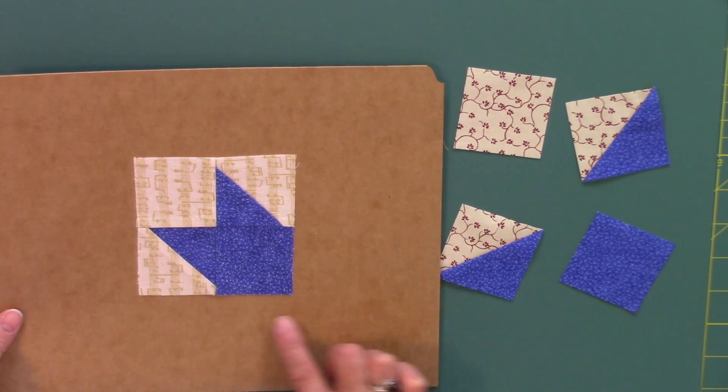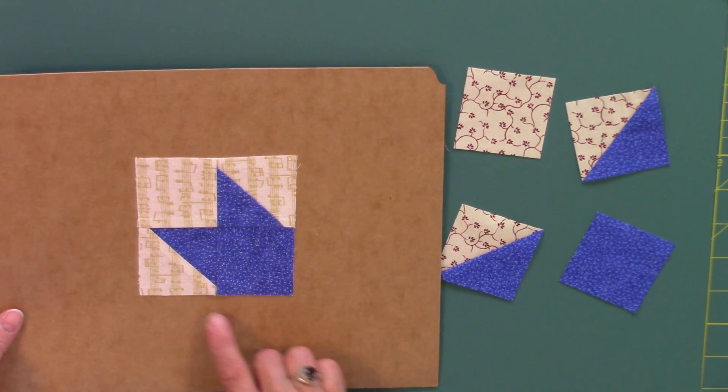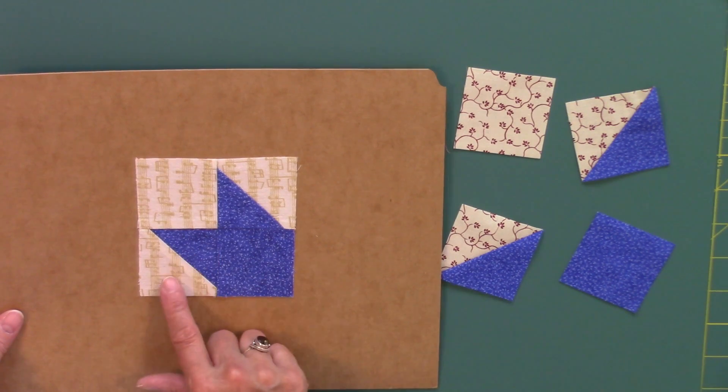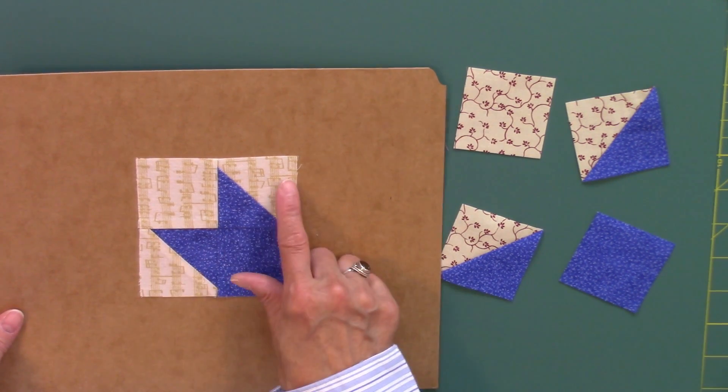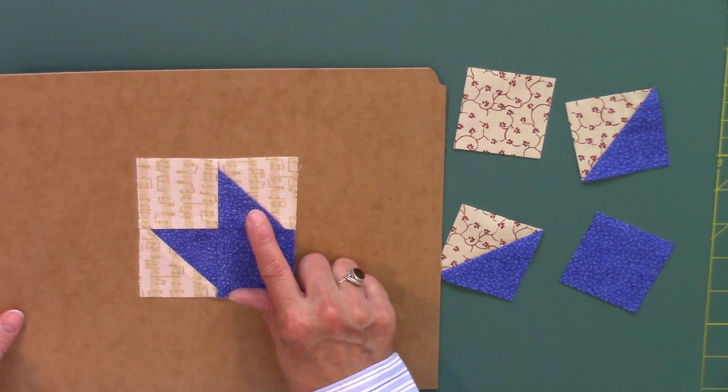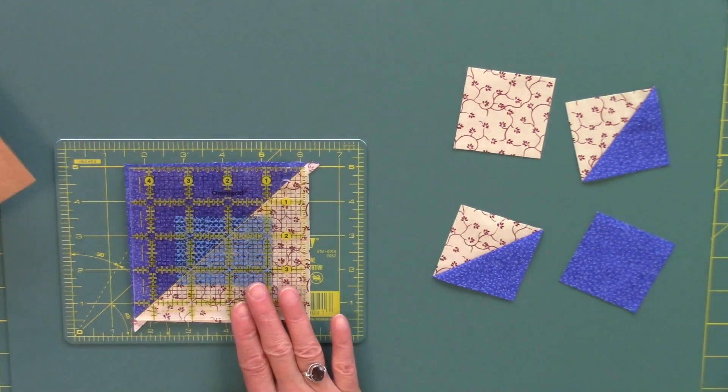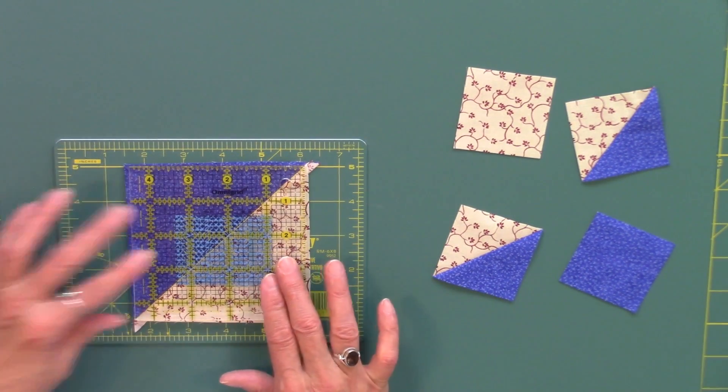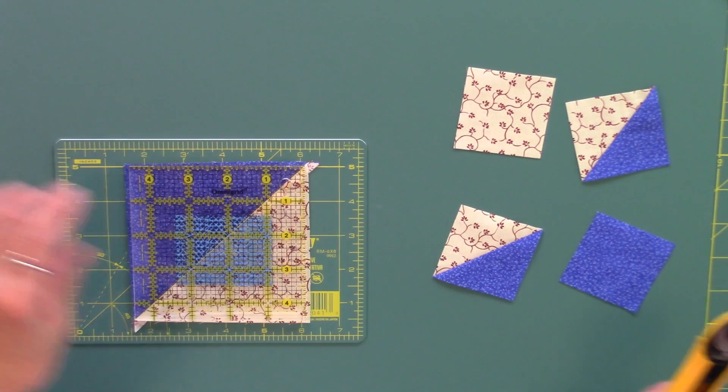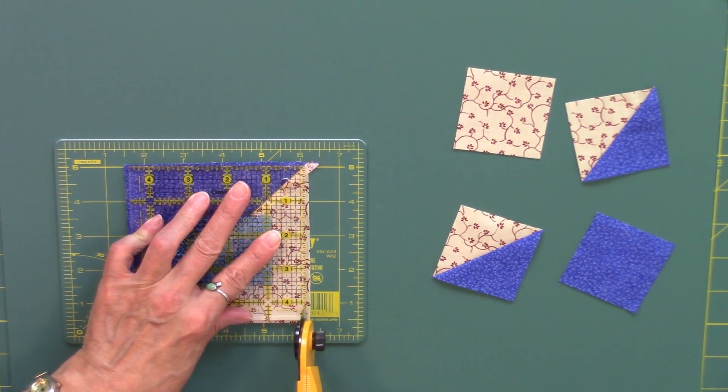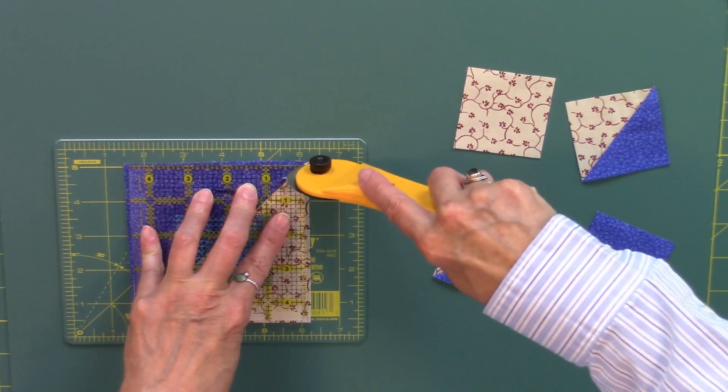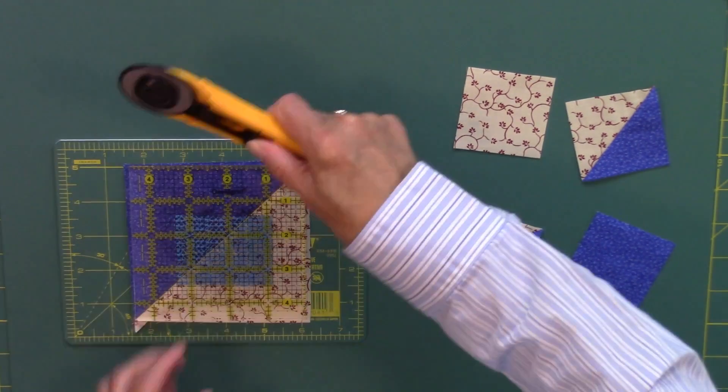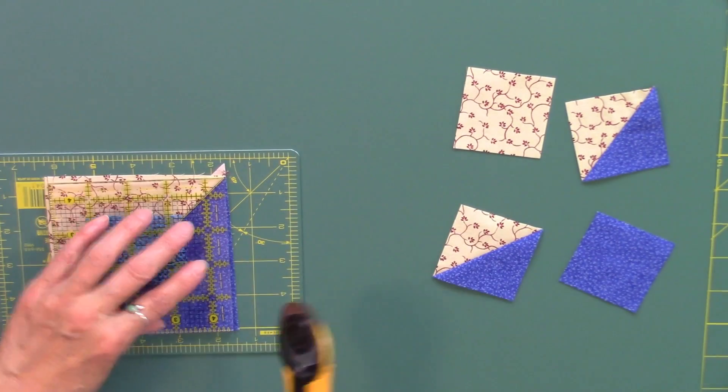Within each of the star points that we are going to create I use one half square triangle that's pressed to the light and the other half square triangle is pressed to the dark. So I'm going to go ahead and square up the other half square triangle now so I have pieces from both of these to work with.